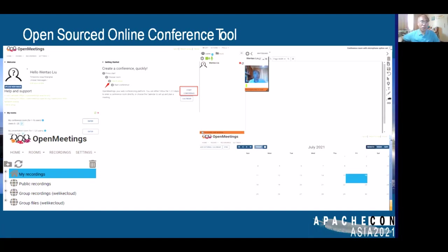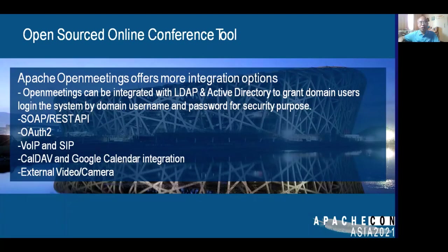After you log in to the system, you will see a dashboard. Just simply click to enter the conference, then choose the conference room. You can start your video conference online, record your sessions, and even schedule meetings on a calendar. Apache OpenMeetings also offers more integration options.